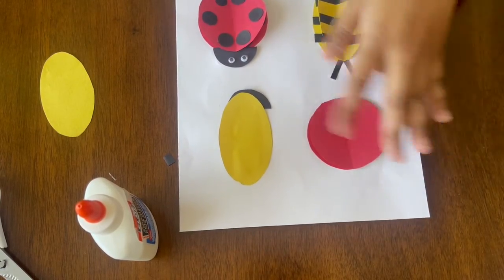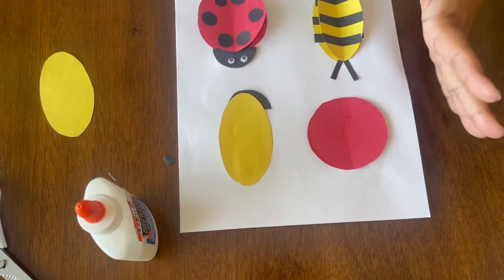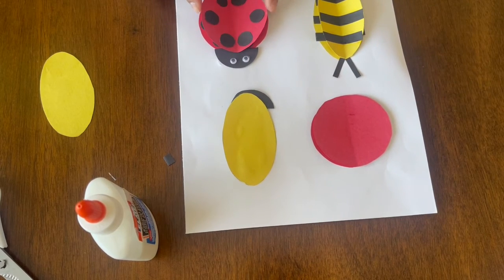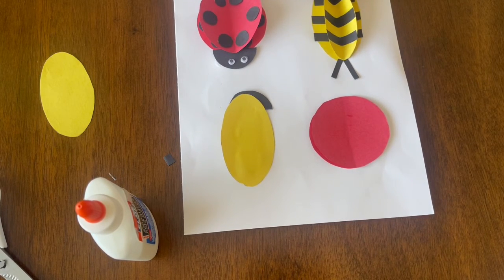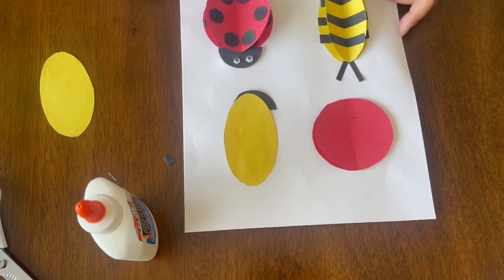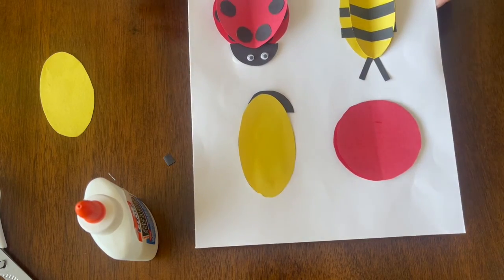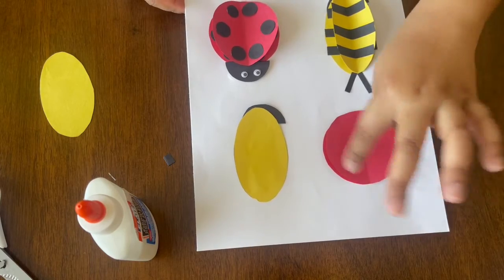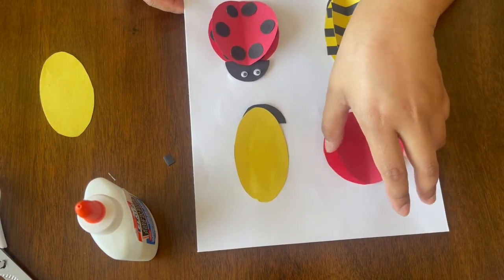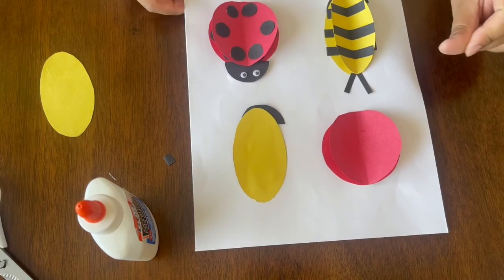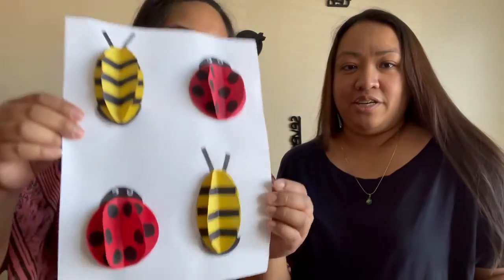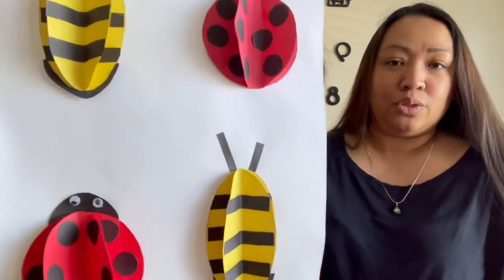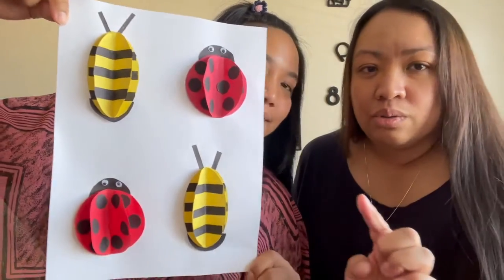Our next step is to finish our other bugs. So here, this is the way it would look, and repeat the process on the top. There goes your 3D bugs guys. We have two lady bugs and three bees right there.